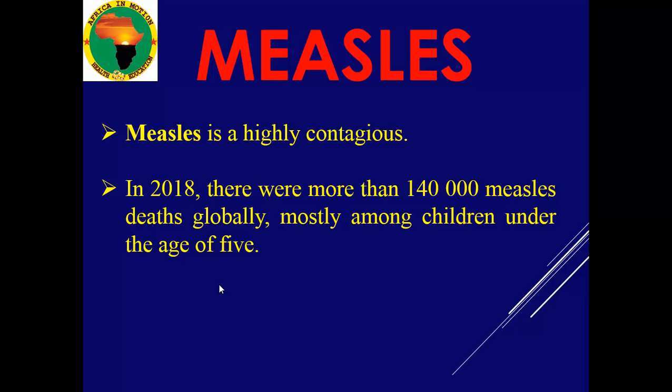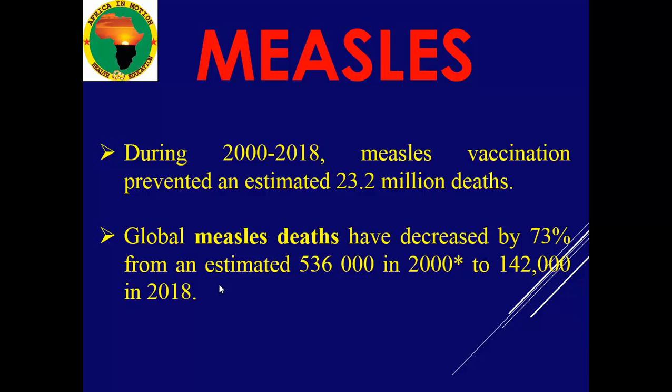Measles is highly contagious. In 2018 there were more than 140,000 measles deaths globally, mostly among children under five years. However, during the period of 2000 to 2018, measles vaccination prevented an estimated 23.2 million deaths. Global measles deaths decreased significantly by 73%, from an estimated 536,000 in 2000 to 142,000 in 2018. This is a good news report from the World Health Organization.